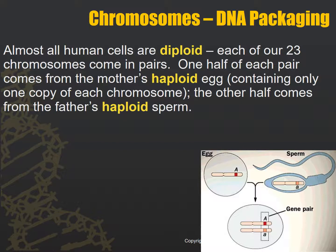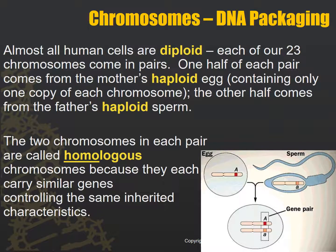One half of each pair comes from the mother's haploid egg — haploid means half — and the other half comes from the father's haploid sperm. So we have one chromosome in each, the sperm and the egg, and then we make a diploid zygote. Two chromosomes in each pair are called homologous — homo meaning same — because they carry similar genes controlling the same inherited characteristics.